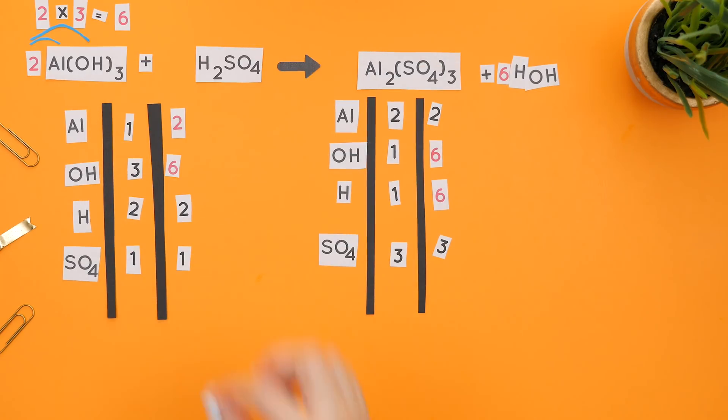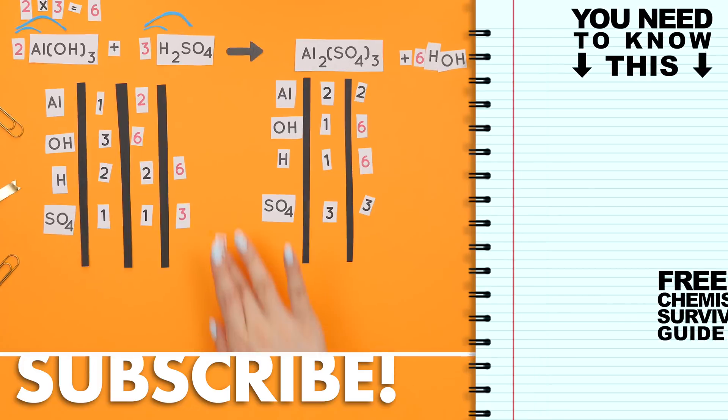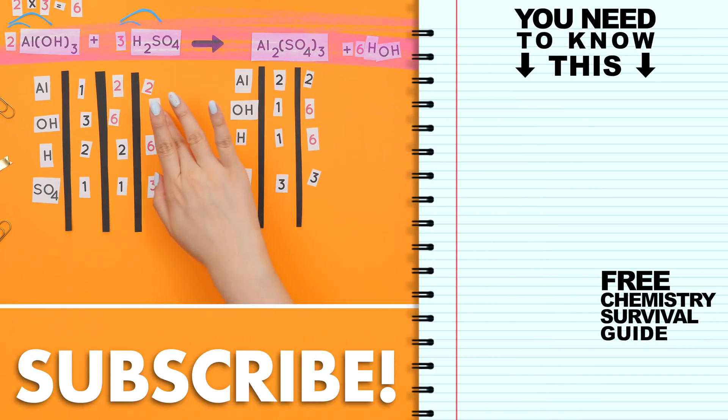So we'll balance SO4 by placing a three in front of H2SO4 and distribute the three to the hydrogen and SO4. We now have two times three, so six Hs and three SO4s. And this is our balanced equation.